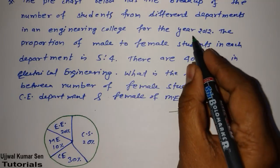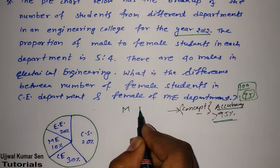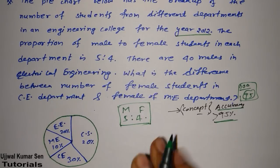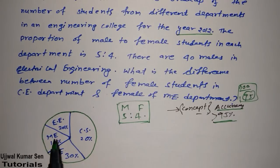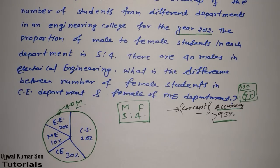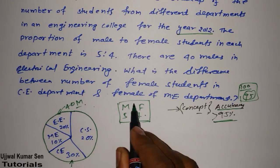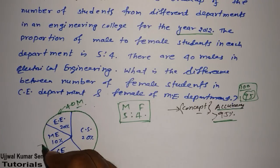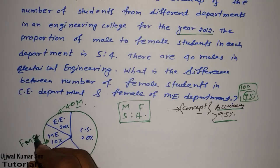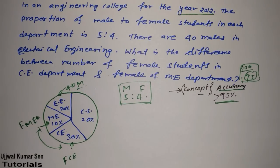from different departments in an engineering college for the year 2012. The proportion of male to female students in each department is 5 to 4 — this is one of the keys to solving the problem. There are 40 males in the electrical engineering department. We need to find the difference between the number of female students in civil engineering and female students in mechanical engineering.